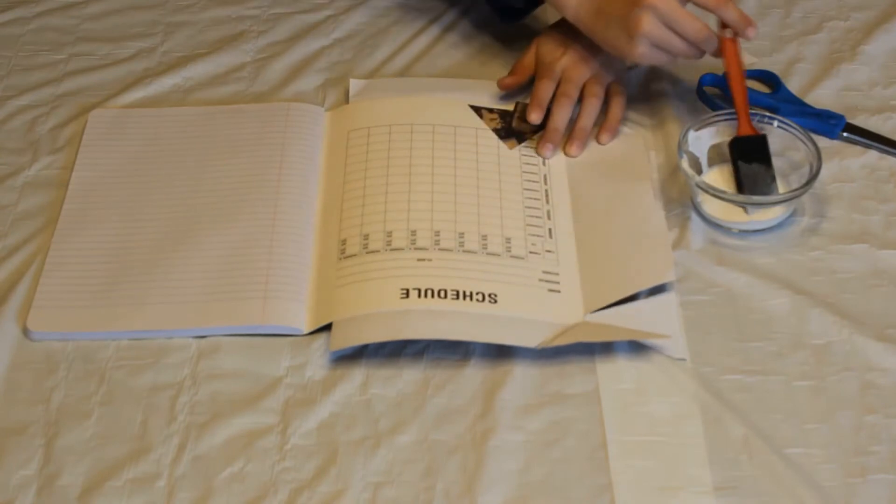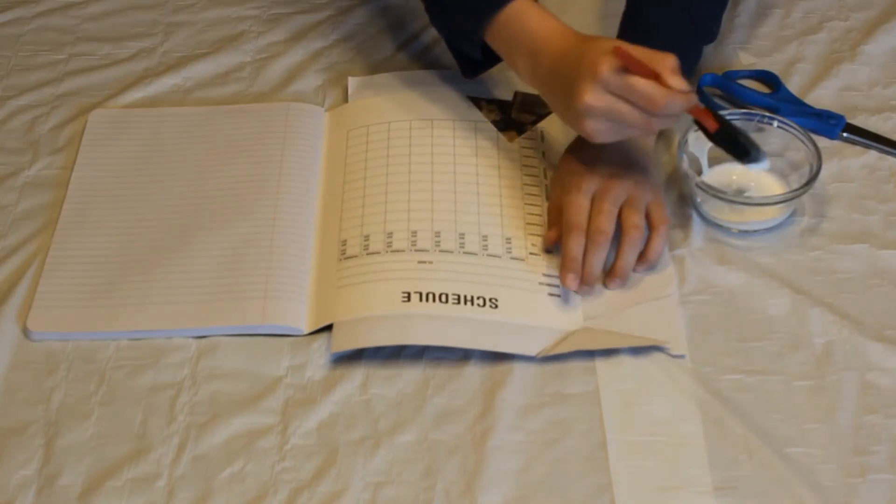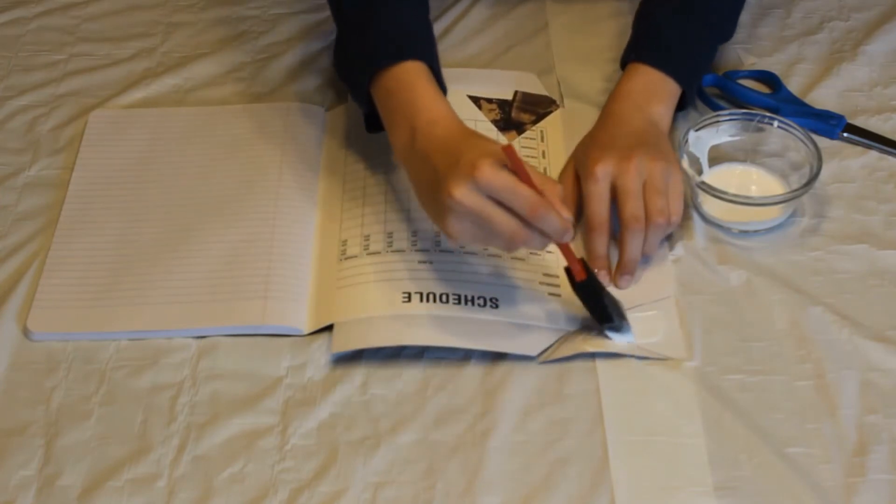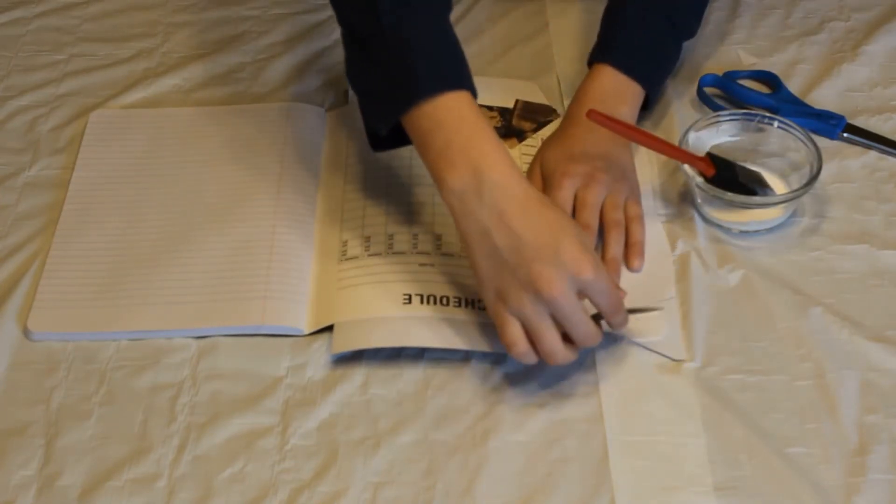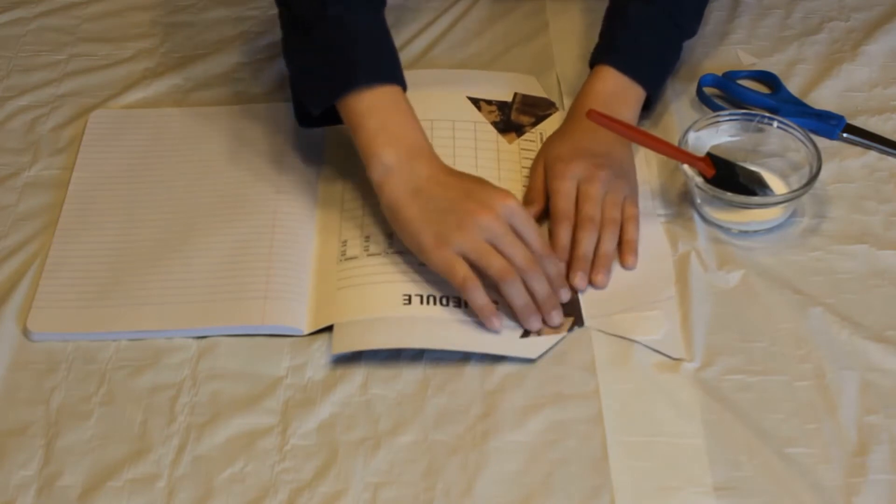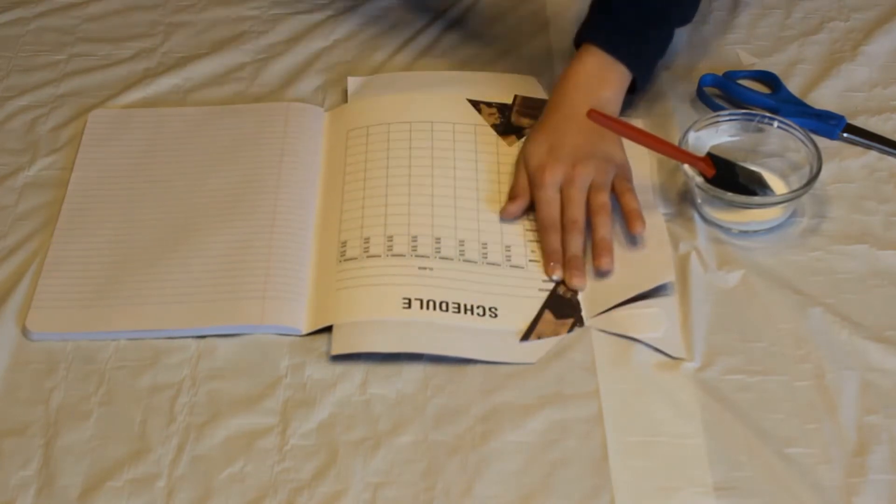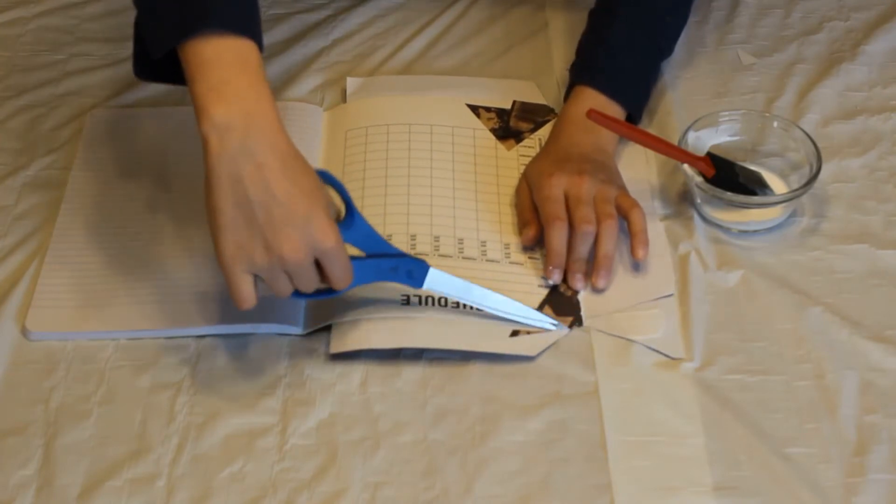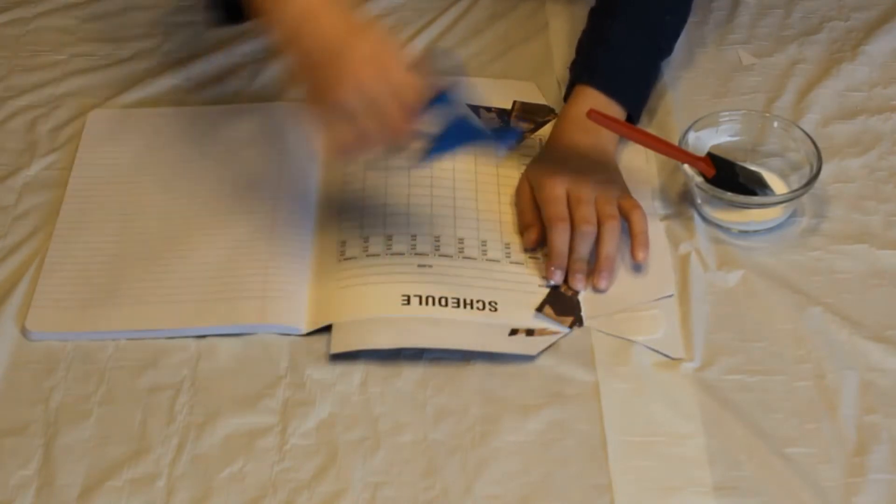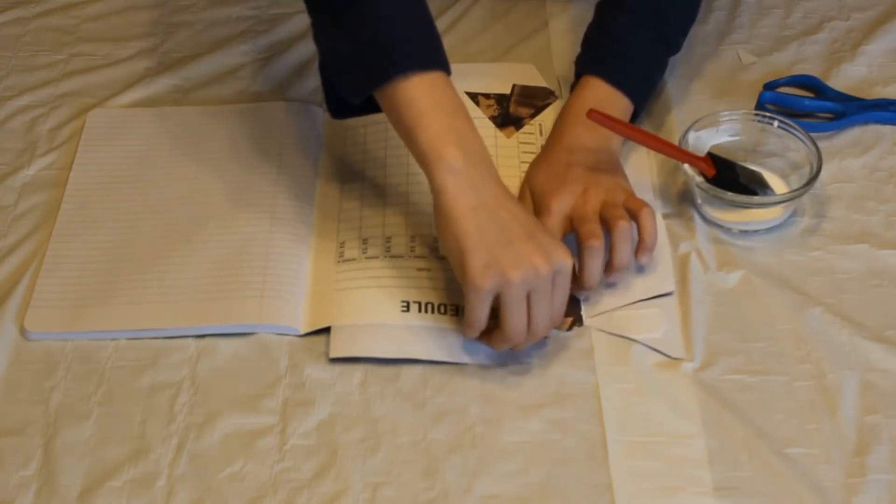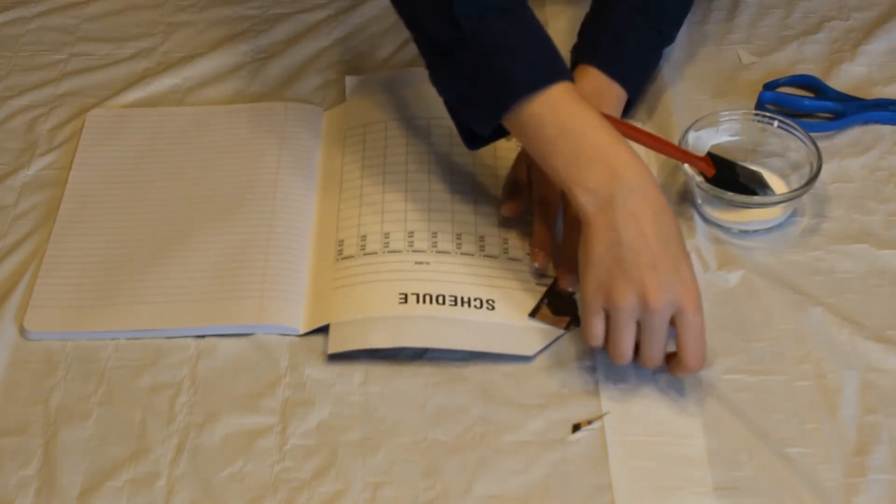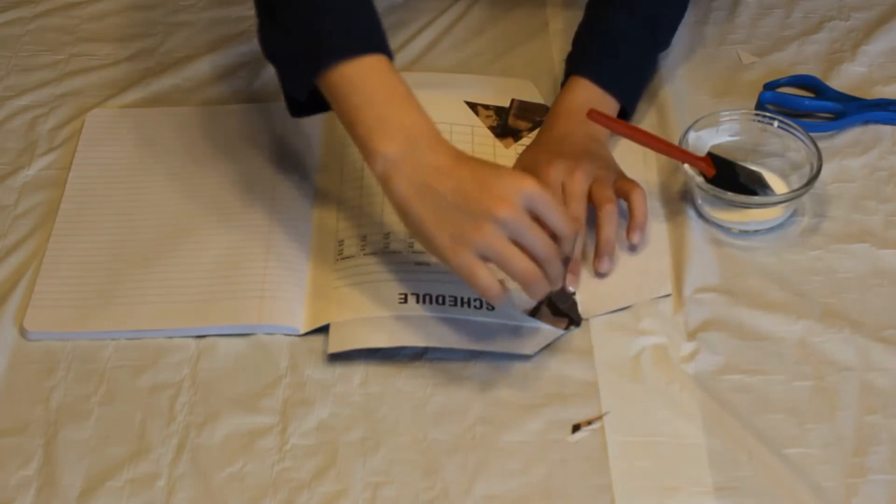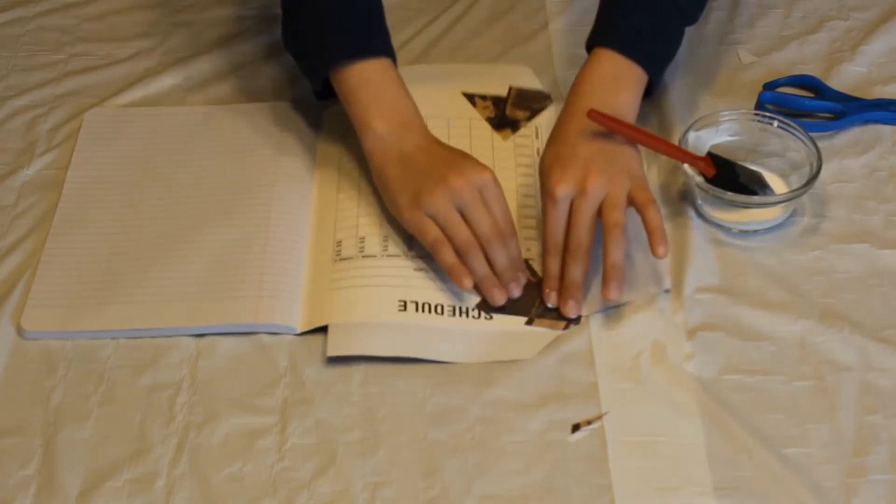Then you do the next corners. Get some glue and put it on the corners. Then you're going to fold them in. You can see it has some extra, so I'm going to cut that off. Then glue this one in, and then glue this one in.